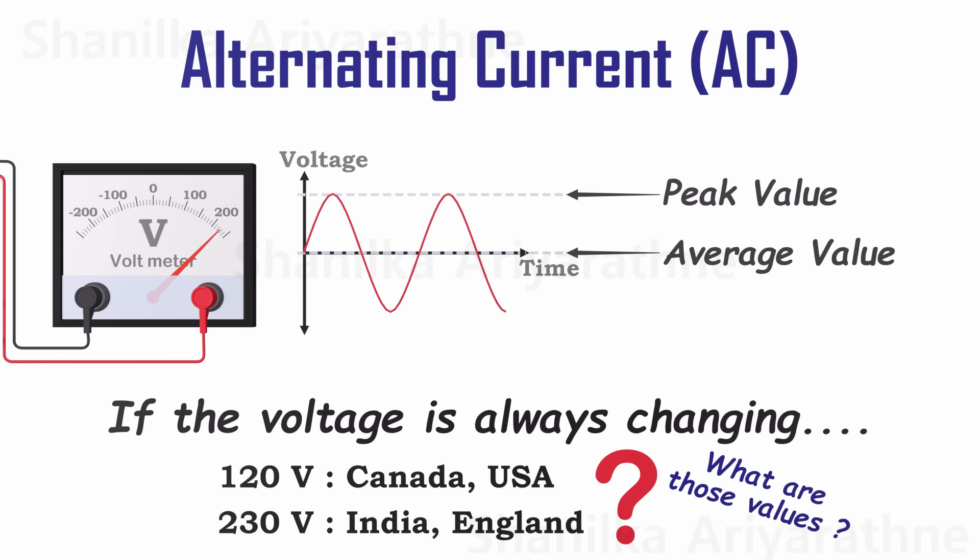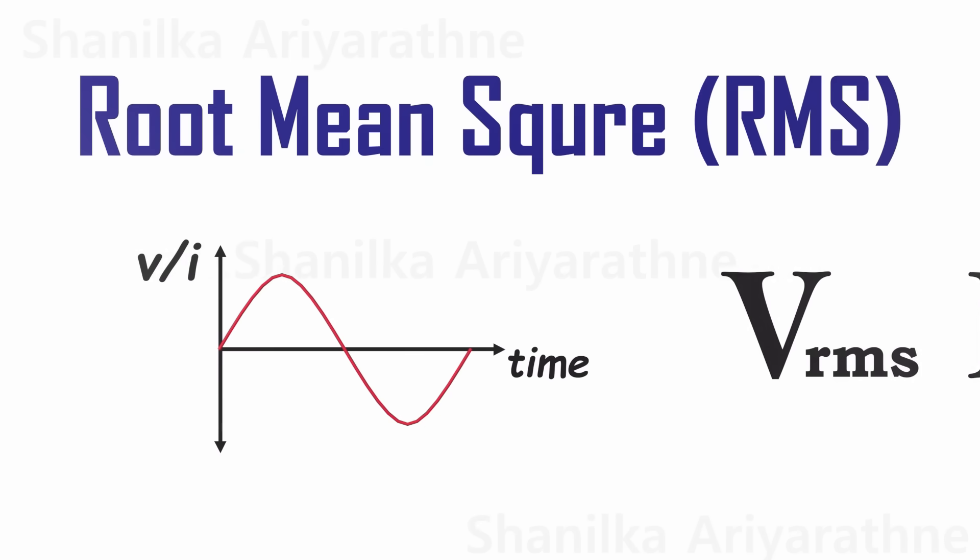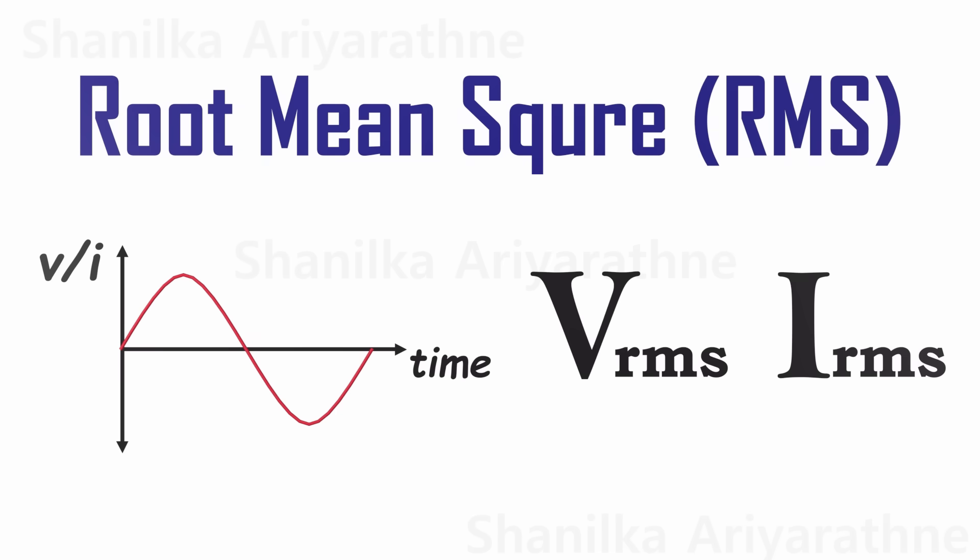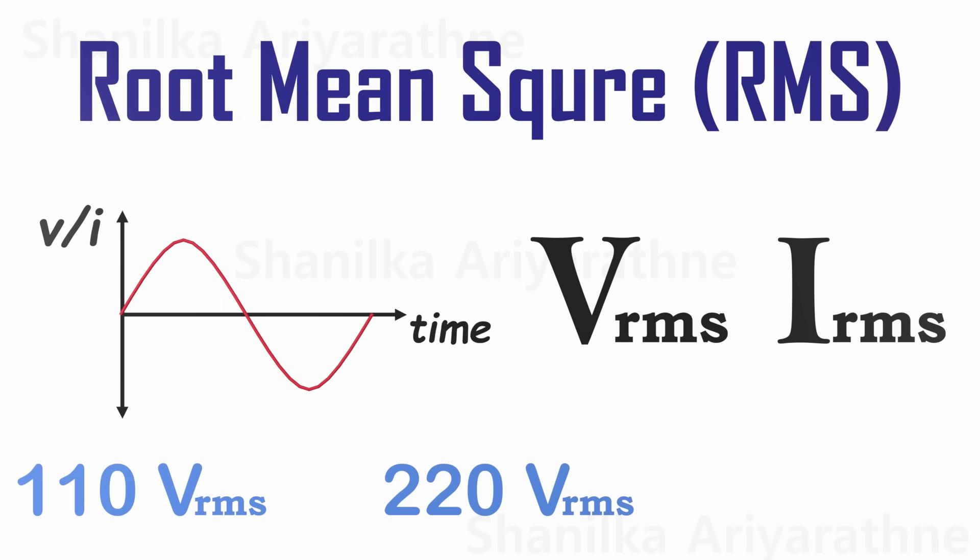However, that's not exactly the case. Enter RMS, root mean square, a fascinating concept used to measure voltage and current in AC electricity.